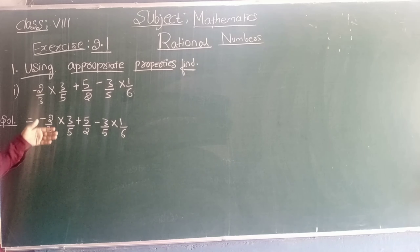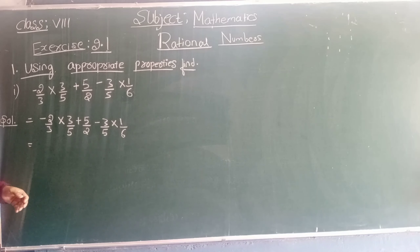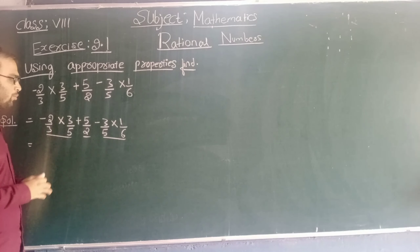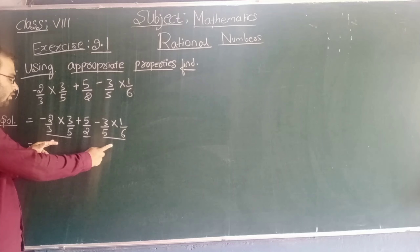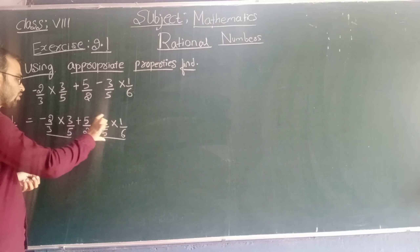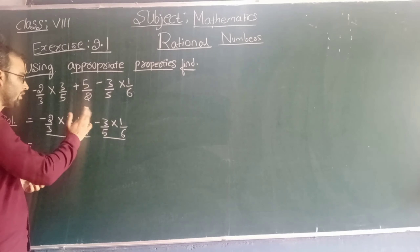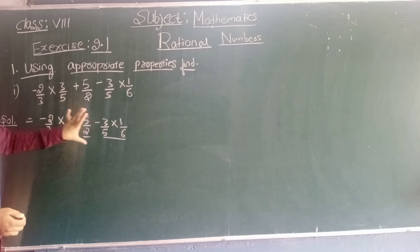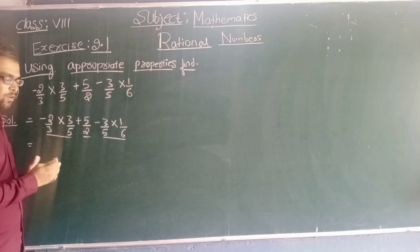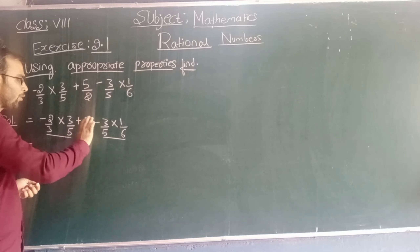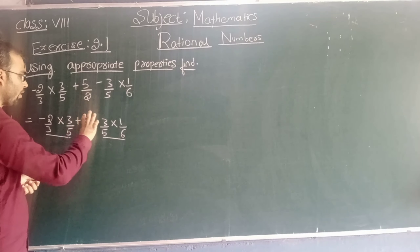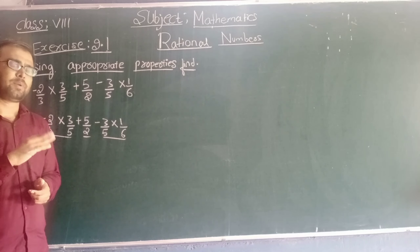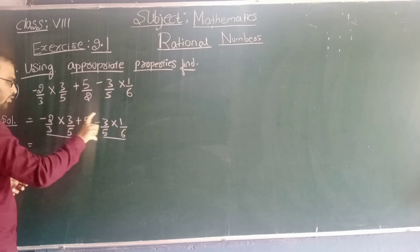We have taken the question as it is. Now, three groups can be made here. Look at these two groups — here 3 by 5 is common. Don't worry about the sign — here plus is there, here minus is there. Some numbers are common in these groups. So we will write plus 5 by 2 after this term. Here we will be using commutative property — if we add A plus B or B plus A, we get the same answer. So we will shift this term.